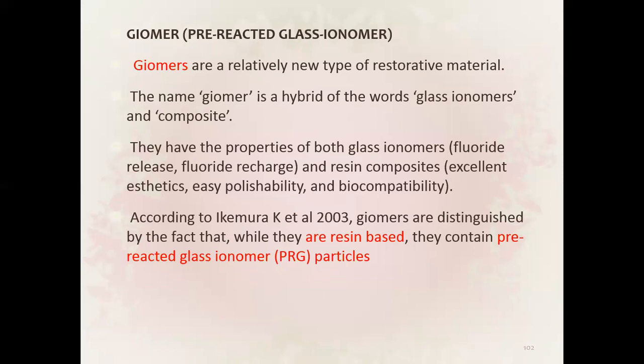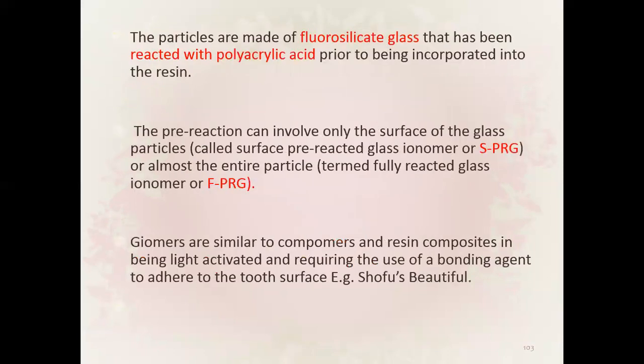According to Echimora et al. 2003, giomers are distinguished by the fact that while they are resin-based, they contain pre-reacted glass ionomer particles. The particles are made up of fluorosilicate glass that has been reacted with polyacrylic acid prior to being incorporated into the resin. The pre-reaction can involve only the surface of the glass particles — surface pre-reacted glass ionomer or S-PRG — or almost the entire particle, termed fully pre-reacted glass ionomer or FPRG. Giomers are similar to compomers and resin composites in being light activated and requiring a bonding agent to adhere to tooth structure.